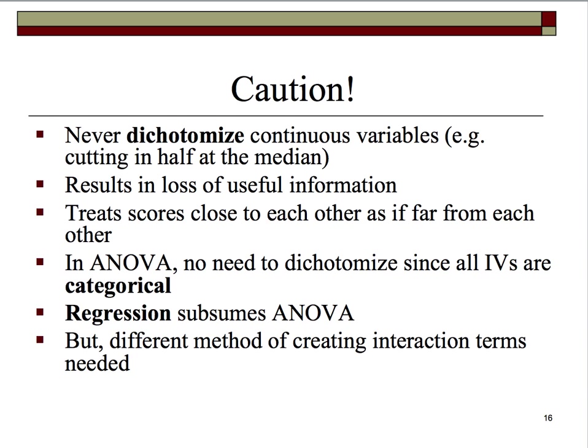Dichotomizing tends to treat scores that are close to each other as if they're actually far from each other. In ANOVA, we don't have to dichotomize since all the independent variables are categorical — they are group membership: two-by-three, four-by-three, or two-by-two. Treatments and controls would be the natural grouping mechanism.